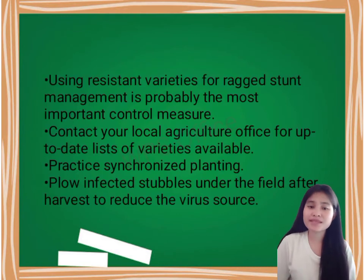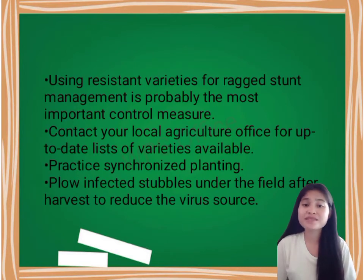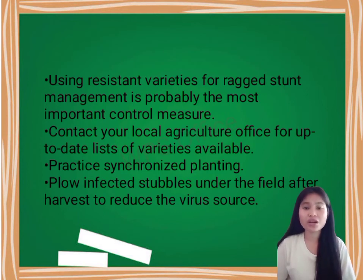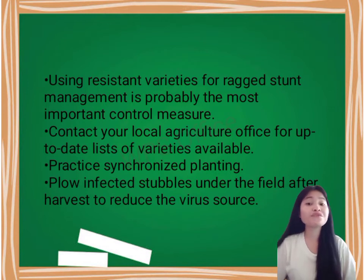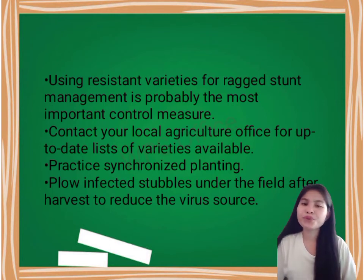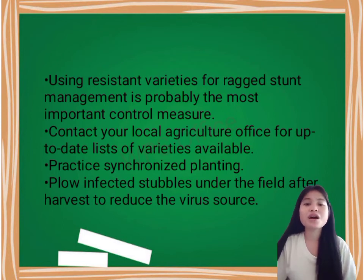Using resistant varieties for ragged stunt management is probably the most important control measure. Contact your local agriculture office for up-to-date lists of varieties available. Practice synchronized planting. Plow infected stubble under the field after harvest to reduce the virus source.